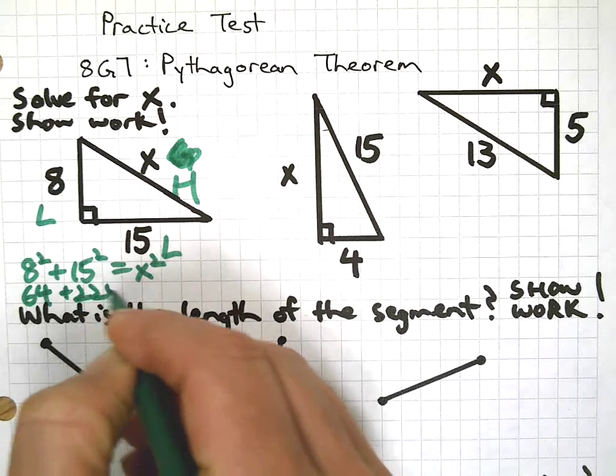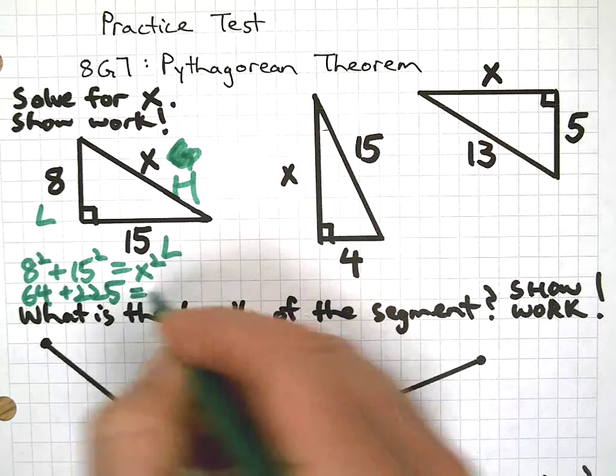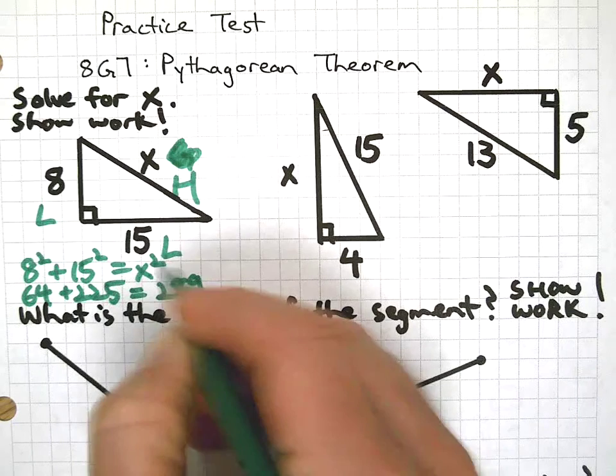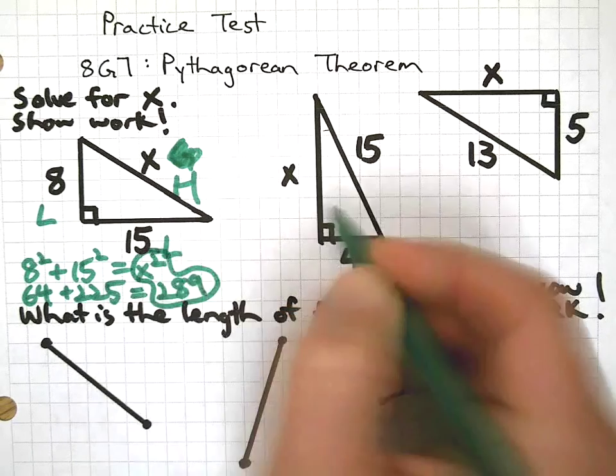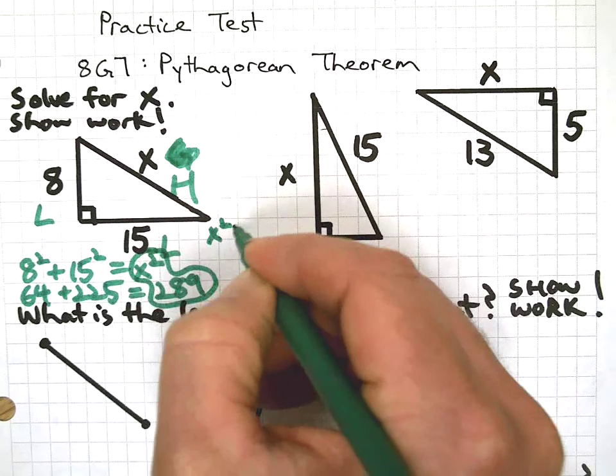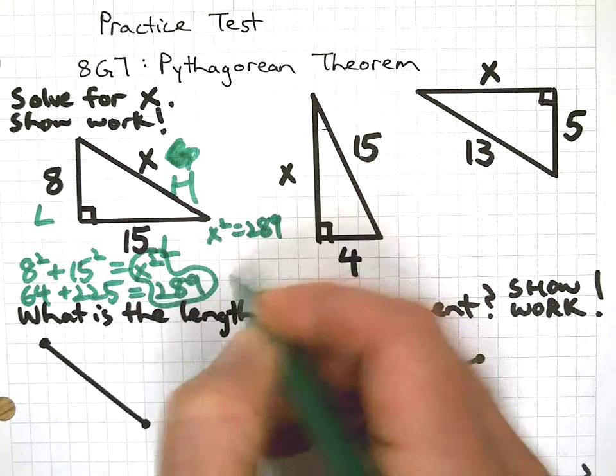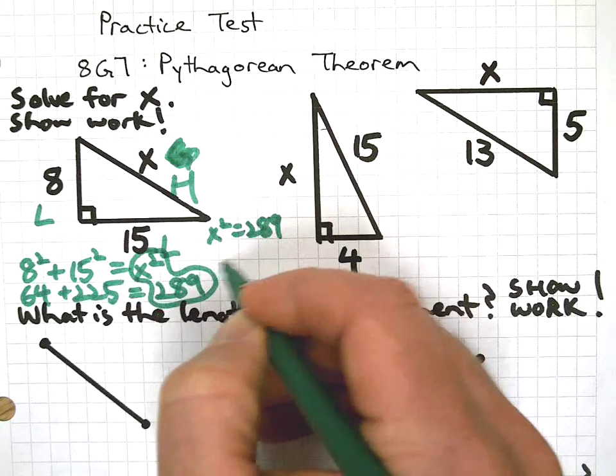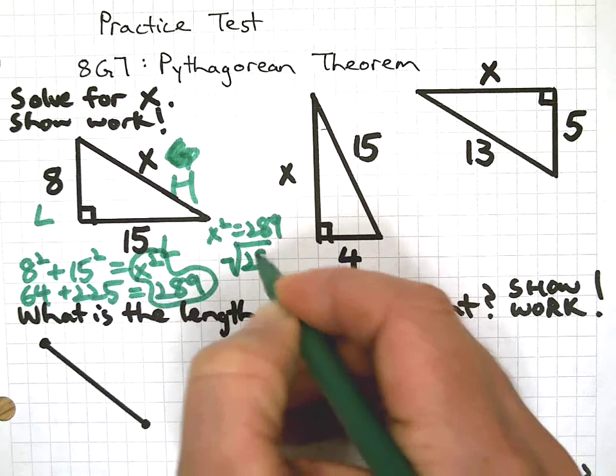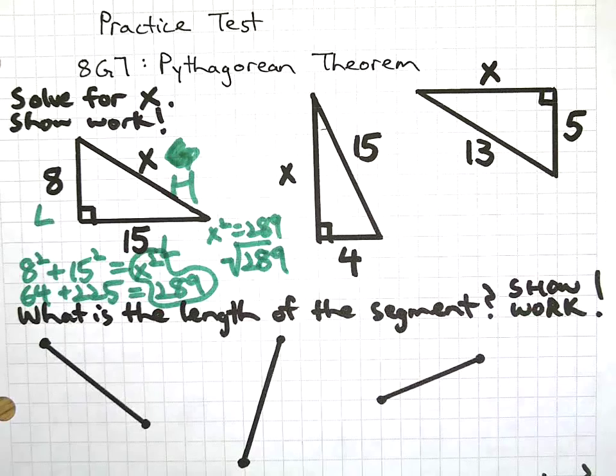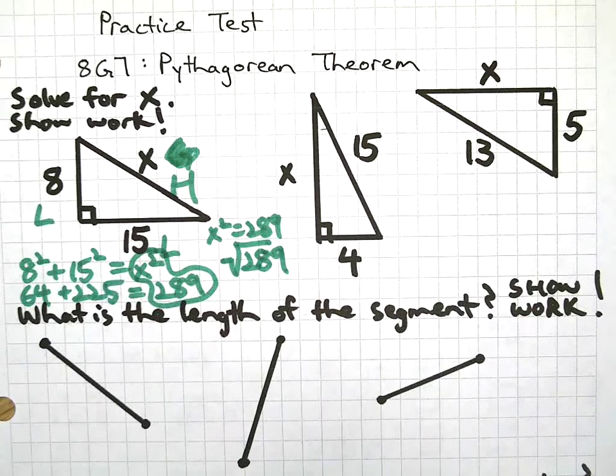64 plus 225, and add those together. You can see that x squared is 289.